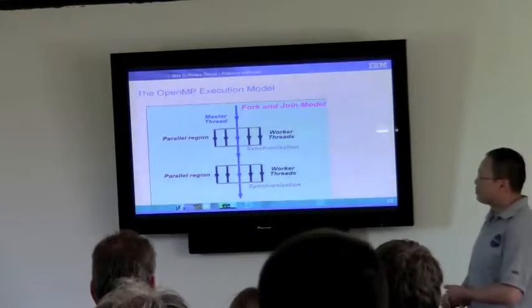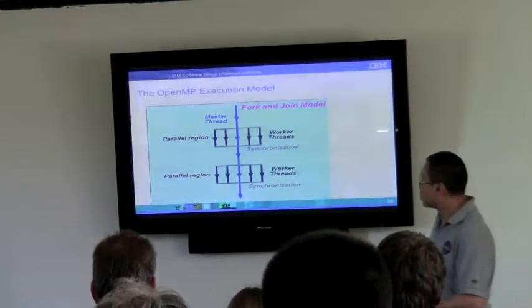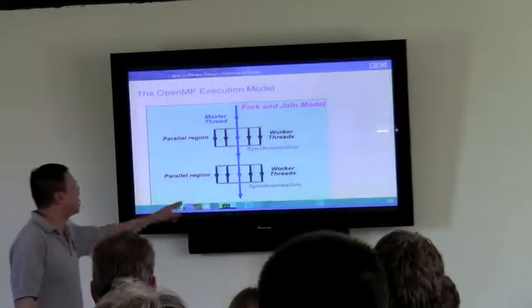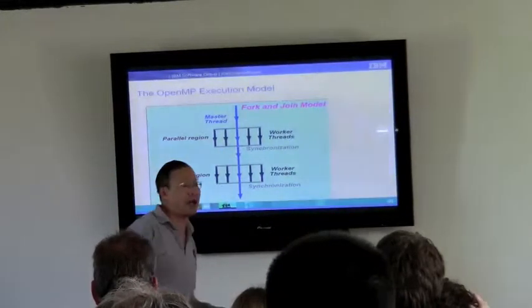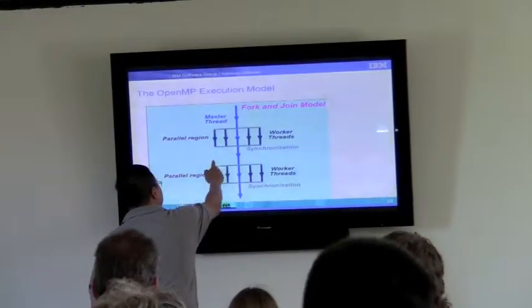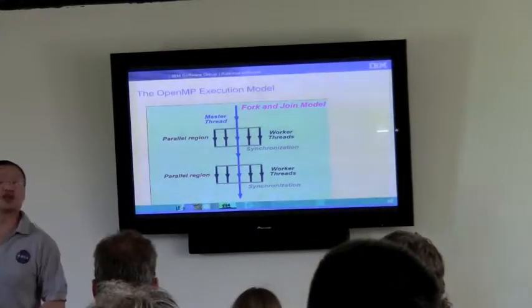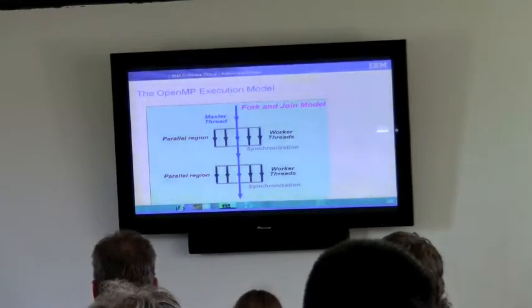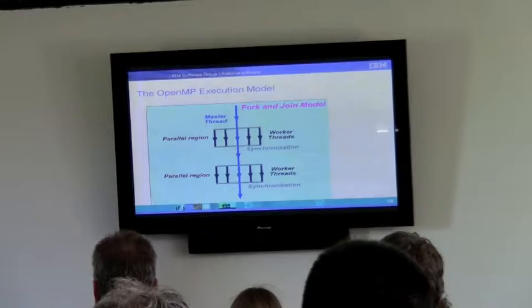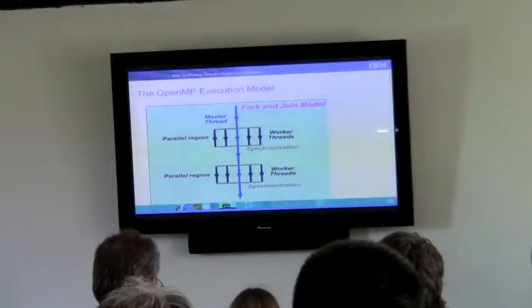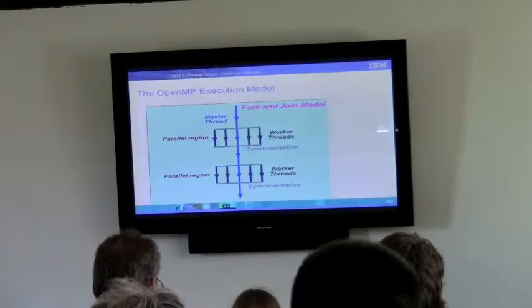The OpenMP execution model is fairly simple: fork-join with a master thread that keeps going, and whenever the parallel region starts it creates a bunch of worker threads. There is generally implicit synchronization at the end of the parallel region, then you come back into the single master thread. What happens to these threads while they're waiting for the next parallel region? You could spin, you could sleep — they all have their own costs. OpenMP doesn't specify exactly what needs to be done here because it's left to what each platform wants to do.